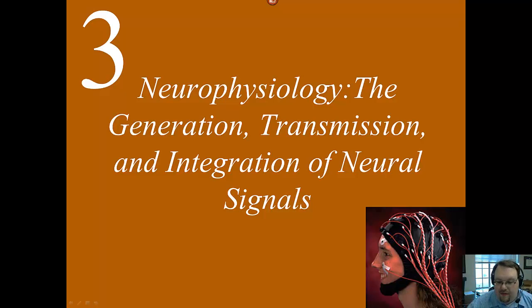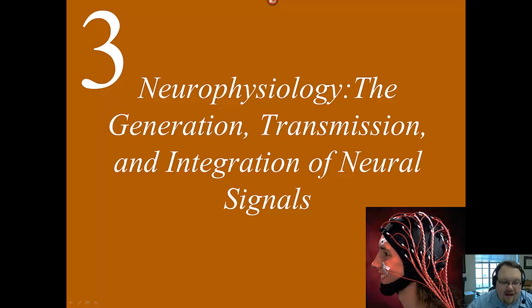Welcome to the second video on the third chapter. In the first video we talked about what an action potential is and the fact that it's an all-or-nothing proposition — either it fires at full force or it doesn't fire at all. In this lecture we're going to talk more about the nuts and bolts: how does this actually happen, why does it happen, and why it's an all-or-nothing event.